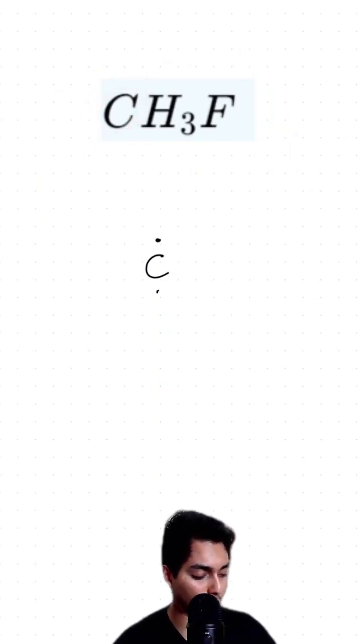I know that carbon has one two three four valence electrons here and next I have H3 which I'm going to bond one two three each of which donate one electron here. I'm going to erase that pair of electrons and create a bond.